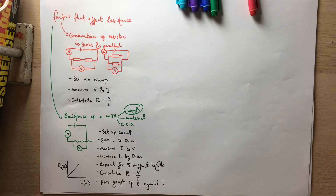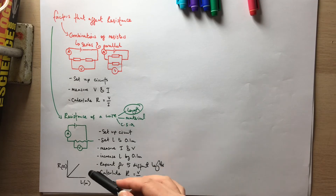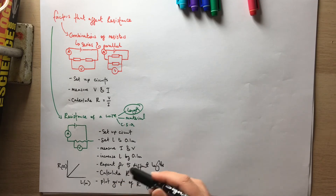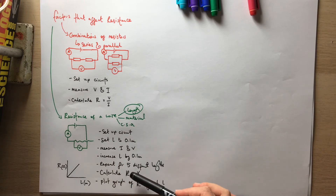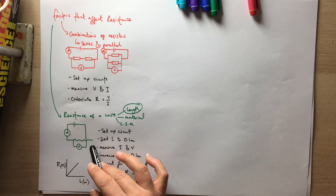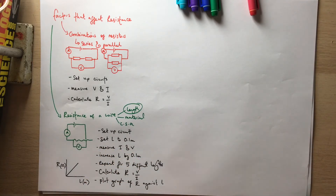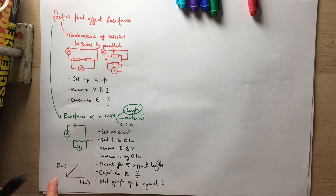There are also improvements you can suggest for this practical. An important one is that the wire is likely to heat up quite quickly. A suggested improvement is to turn off the power supply between measurements, or remove the lead to break the circuit. This prevents the wire from heating up, because if temperature increases, resistance increases further, which would give a curved graph or an increased gradient and affect your results.